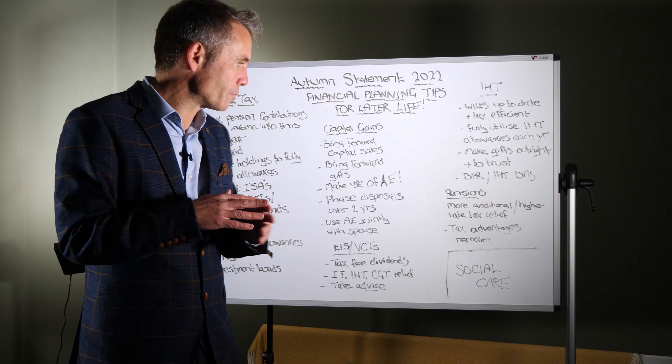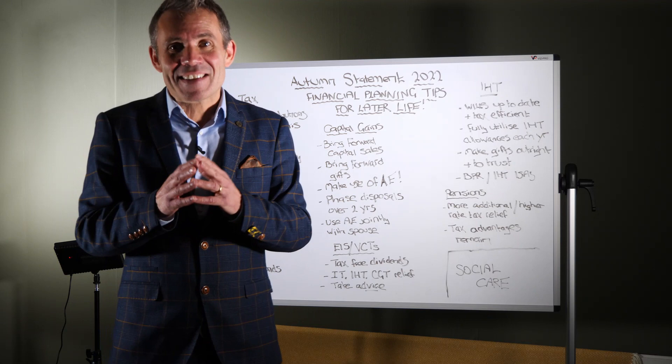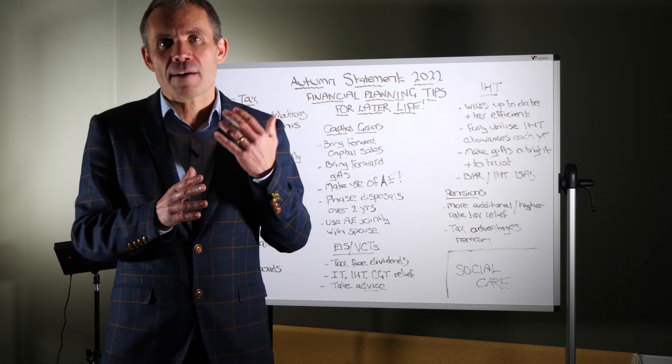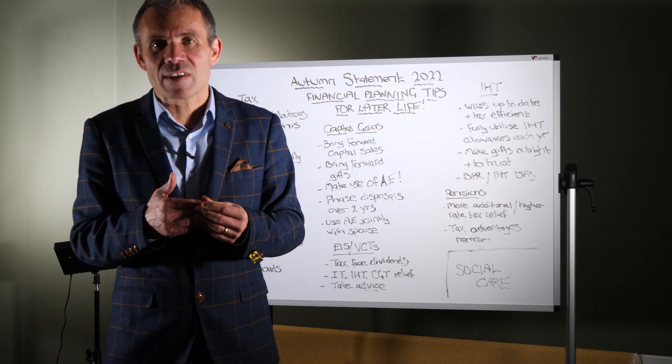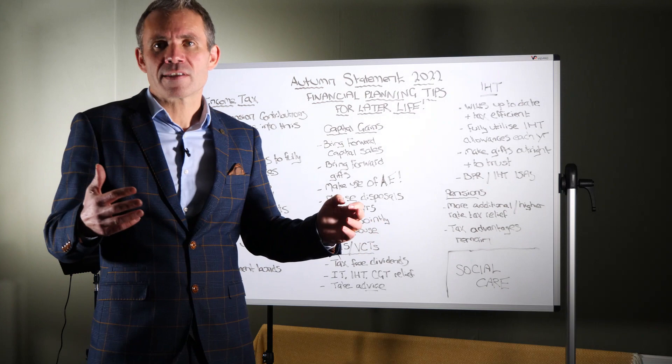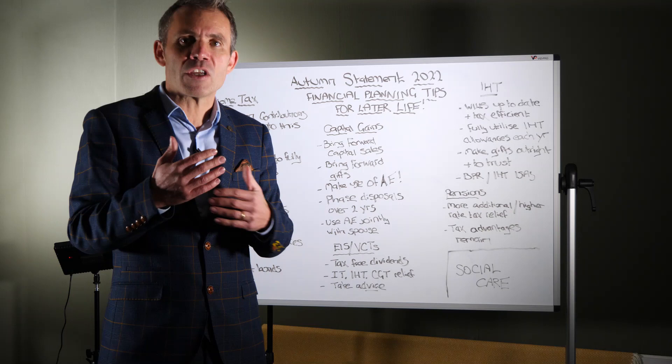As I mentioned, pensions, they didn't touch. So still, all the tax reliefs around pensions still apply. You can still get full rate tax relief on your higher rate of tax or your additional rate of tax. So definitely maximise your pension contributions. Just be aware, as I said, that there's a limit of £40,000, effective limit of £40,000 per year that you can put into a plan.